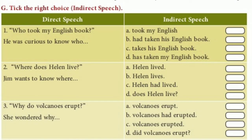Section G: Choose the correct indirect speech. First: 'Who took my English book?' — He was curious to know who had taken his English book. Answer: option B — 'had taken his English book.' Second: 'Where does Helen live?' — Jim wants to know where Helen lives. Answer: 'Helen lives.' Third: 'Why do volcanoes erupt?' — She wondered why volcanoes erupt. Answer: option A — 'volcanoes erupt' (universal truth, tense unchanged).